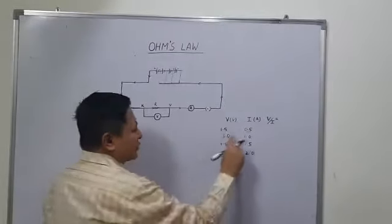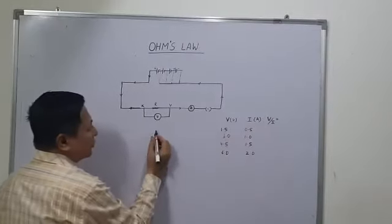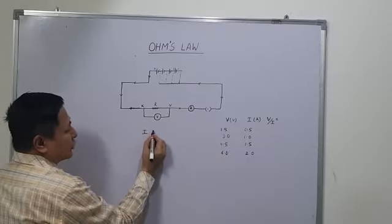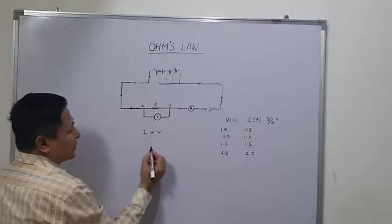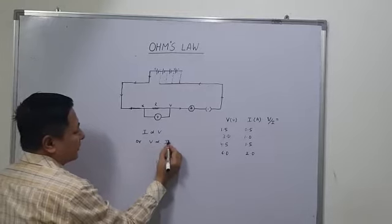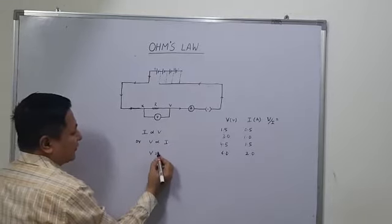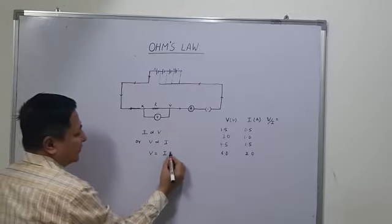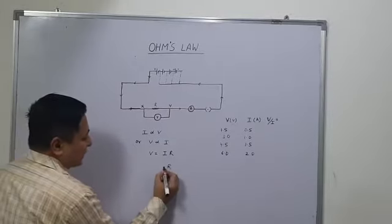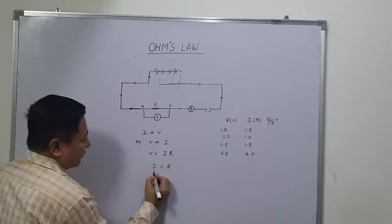According to Ohm's law, the current I is directly proportional to the potential difference V across it, or we can write V ∝ I. When we remove the proportionality sign, V = IR, where R is the constant of proportionality known as resistance. So R = V/I.